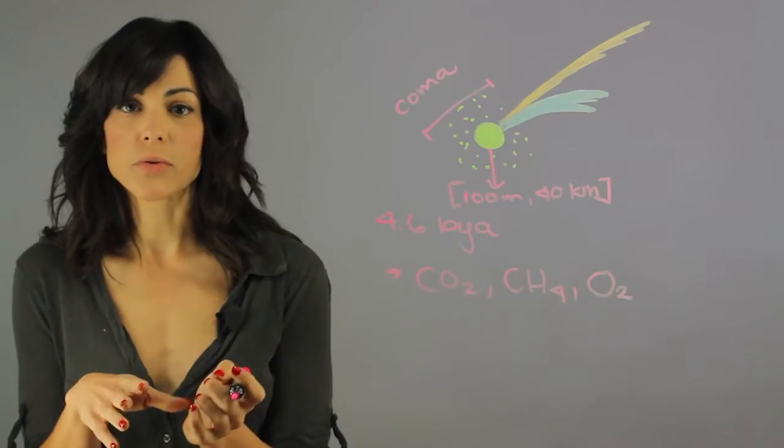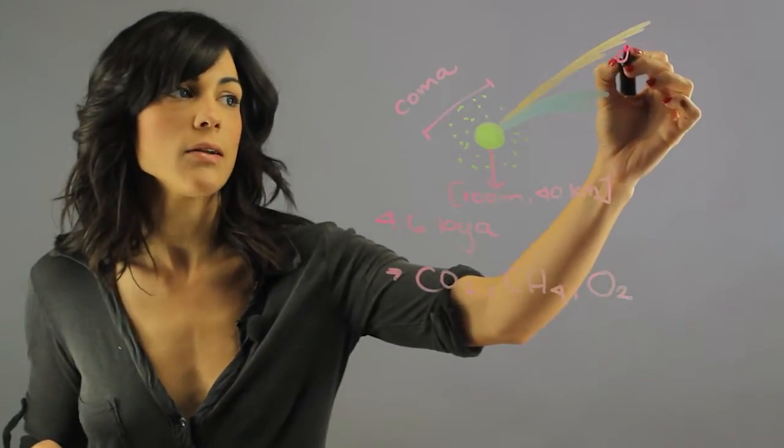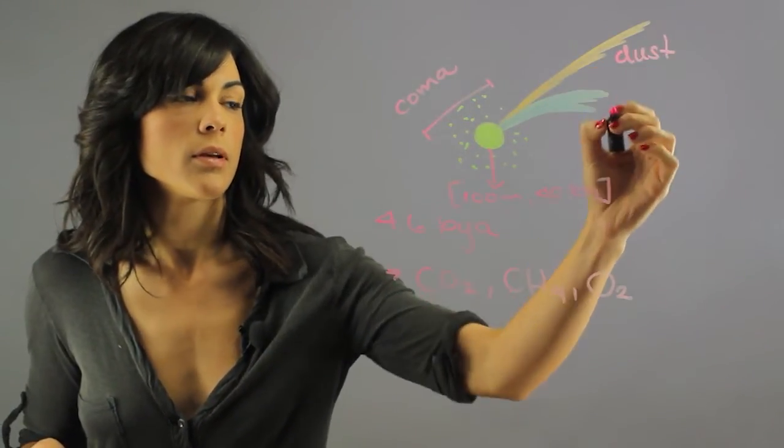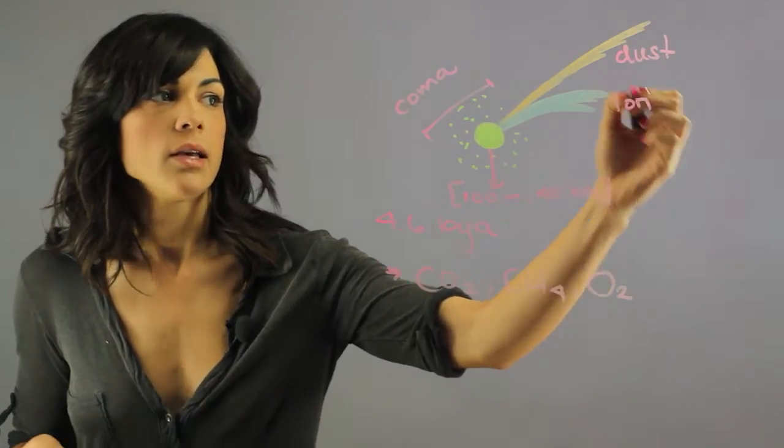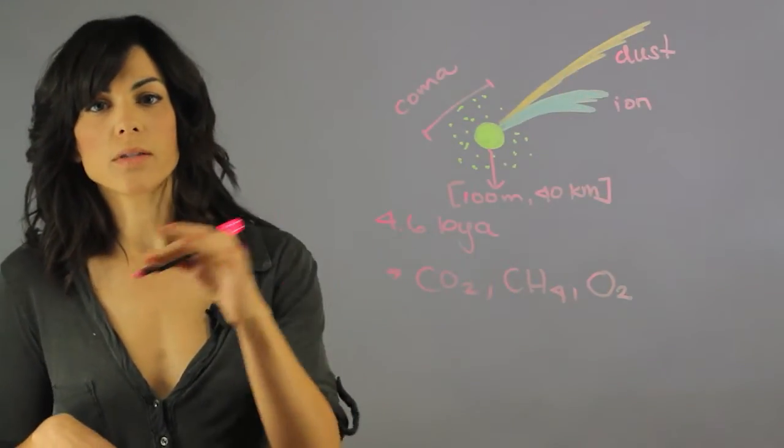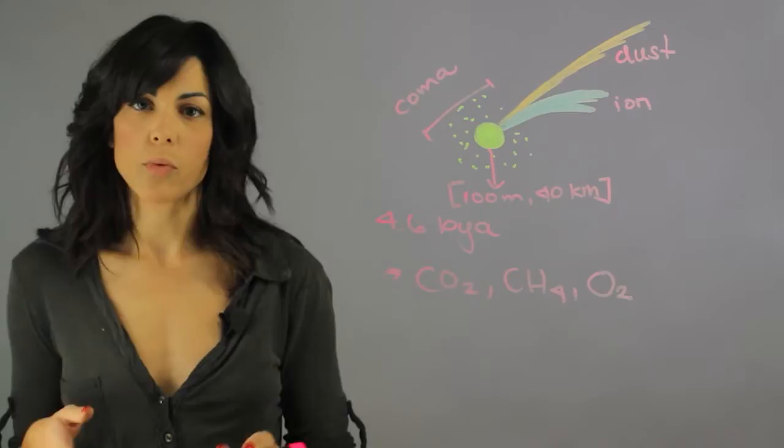The comets also have two types of tails: the dust tail and the ion tail. These two are only visible once they orbit the sun, which is another important fact about comets.